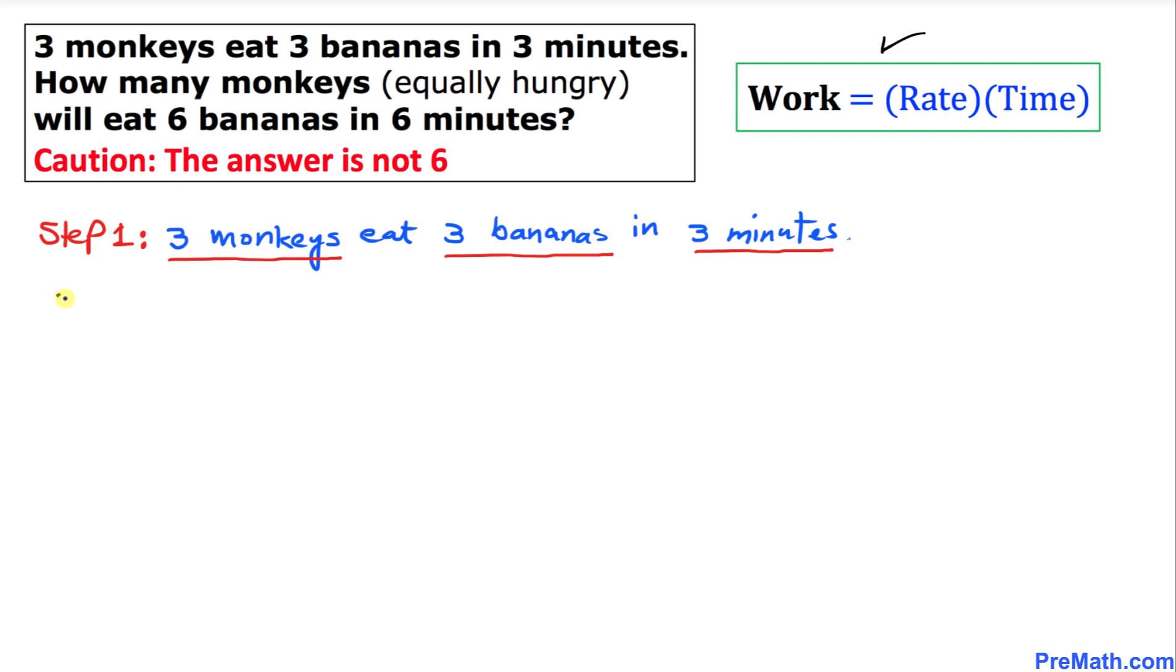So let's get started. We have three monkeys eat equals to how many bananas—three bananas—divided by how many minutes—three minutes. So we use that formula. You can see that three over three is gonna give us one, so I can write this as one banana in one minute.